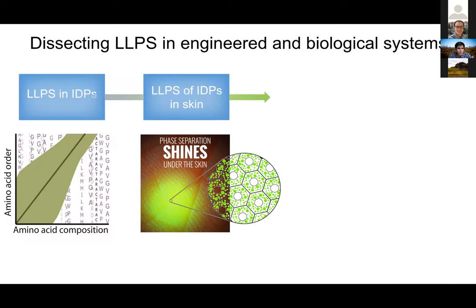This brings me back to my outline. I've given a quick overview of our efforts to sample the sequence space of amino acids to uncover phase separation in IDPs. Now I've told you how we're pivoting — using this knowledge of how to encode phase separation in IDPs to uncover phase separation behaviors in exciting biological systems, with our focus on skin.